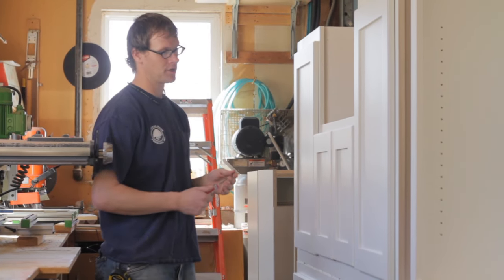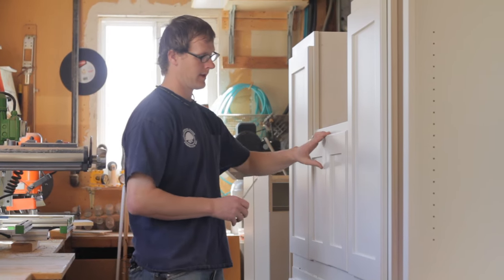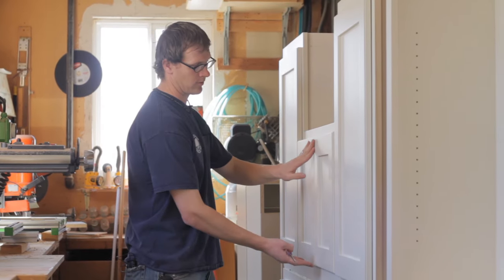It also has adjustments. That's why we can make sure our doors are level. Now typically that happens when we have two doors that are together.